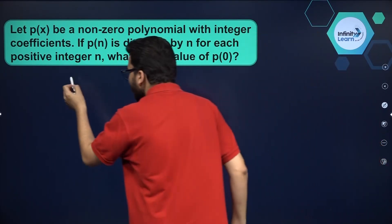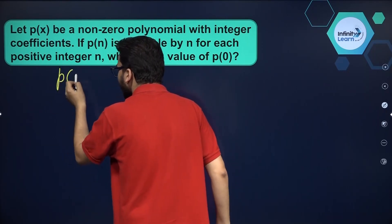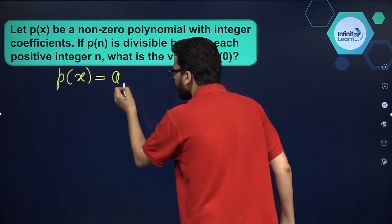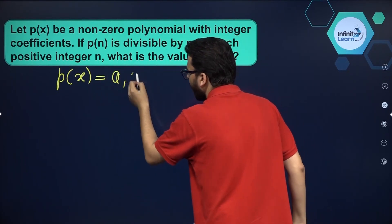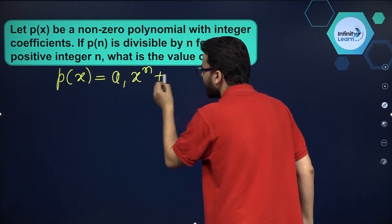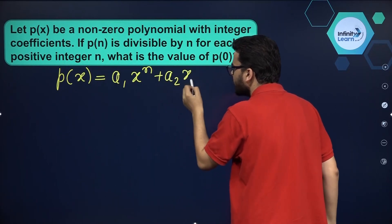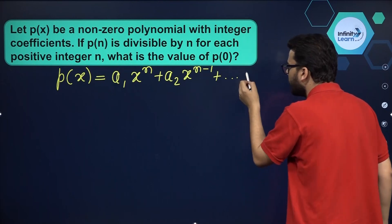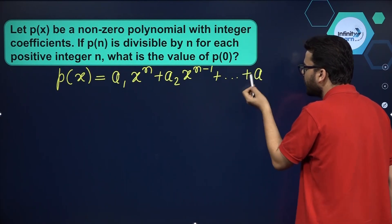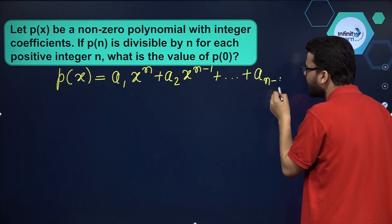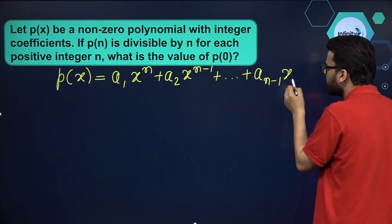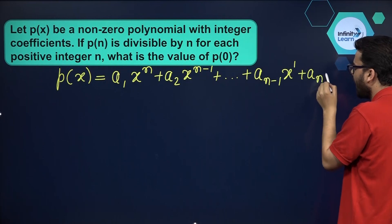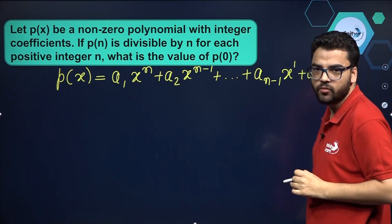We have to assume the standard form of a polynomial P of x. You can assume it like this: a1 x raised to the power n, plus a2 x raised to the power n minus 1, plus dot dot dot, going up till a(n-1) x raised to the power 1, plus aₙ x raised to the power 0.